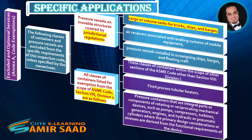Additional exclusions include: pressure vessels installed in oceangoing ships, barges, and floating craft; all classes of containers listed for exemption from the scope of ASME Code Section 8, Division 1; those classes of containers within the scope of other sections of the ASME Code other than Section 8, Division 1; fired process tubular heaters; and pressure containers that are integral parts or components of rotating or reciprocating mechanical devices such as pumps, compressors, turbines, generators, engines, and hydraulic or pneumatic cylinders.